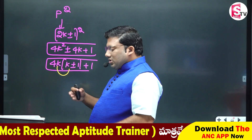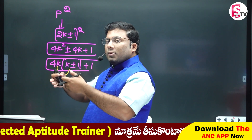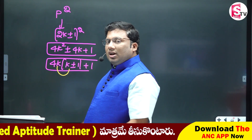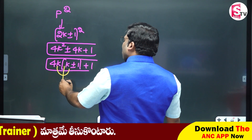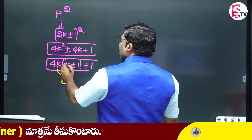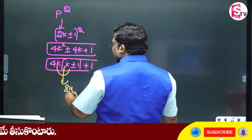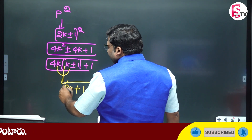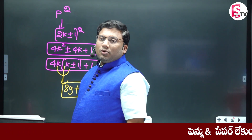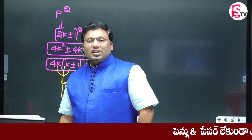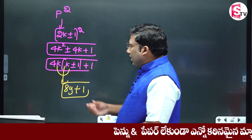K, K-1. If you multiply one number with another consecutively and divide by two, you get 2 into 4, which is 8 into something plus 1. If you make a basis square, the formula is 8y plus 1.